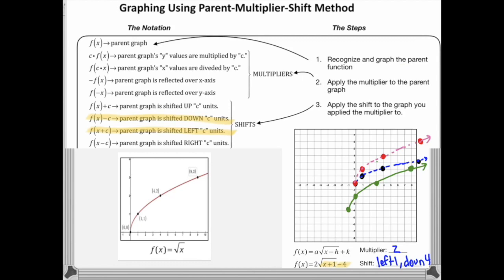That's what our final graph is going to look like. Remember, when graphing square root functions, the point we start off with has to be a filled-in dot. So let's not get sloppy — make sure we put a nice point there and then start drawing our graph from it.